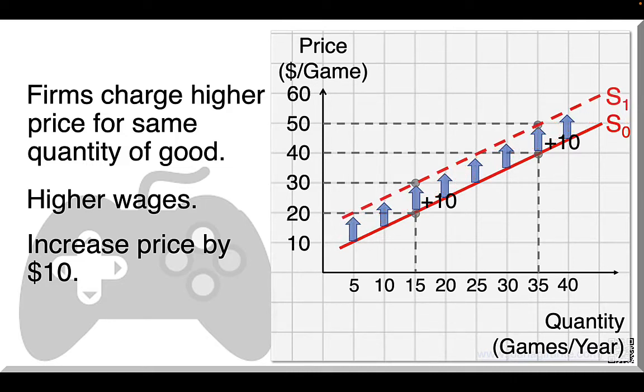This means we'll have a new supply curve, S1, above the original one, S0, by $10, the extra bit each game now costs. Note how the new supply curve, S1, sits to the left of the original supply curve, S0. This means supply decreased because at any level of the price, the number of games producers put on the market is lower than before.